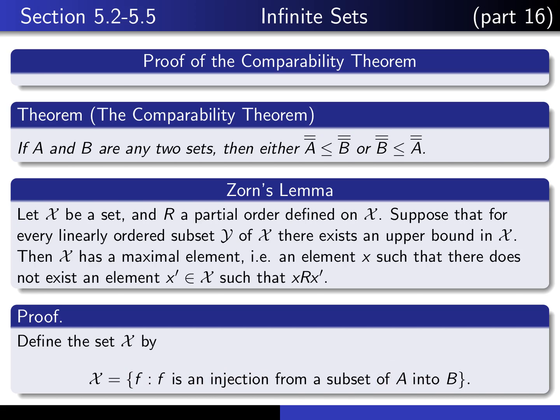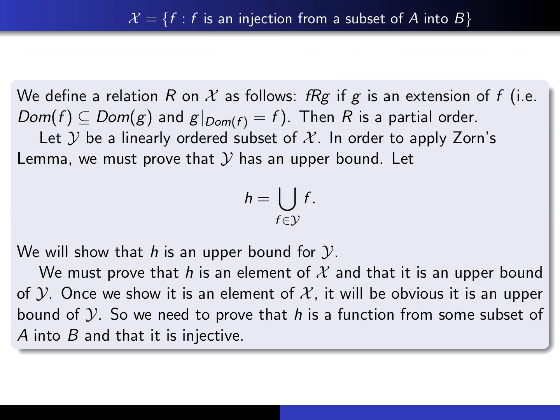That's the idea of the proof. Let's look at the details. X is the set of all functions which are injections from some subset of A into B. X is non-empty because, for example, taking a single point in A as our subset and mapping it to any element in B gives a clear injection. We define relation R on X by saying F is related to G provided G is an extension of F: the domain of F is a subset of the domain of G, and when we restrict G to the domain of F, it agrees with F.